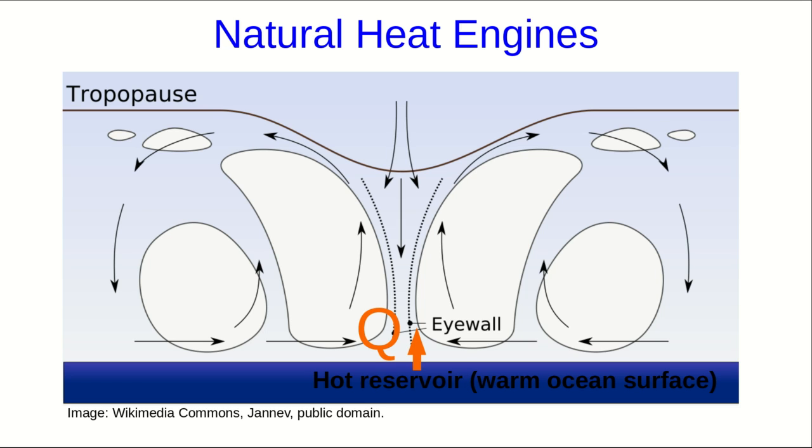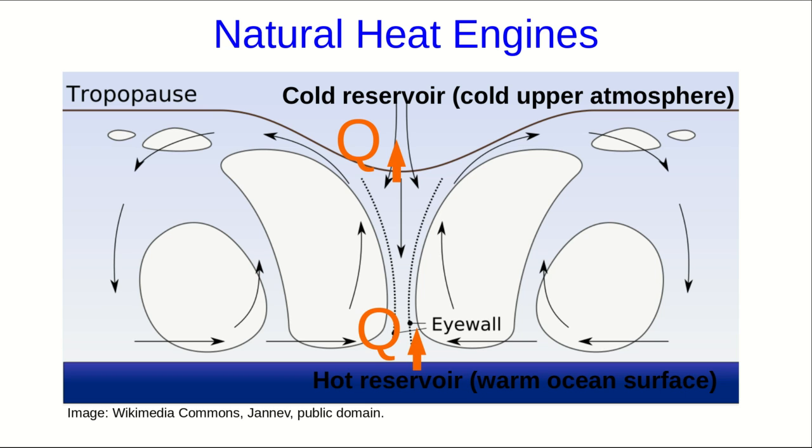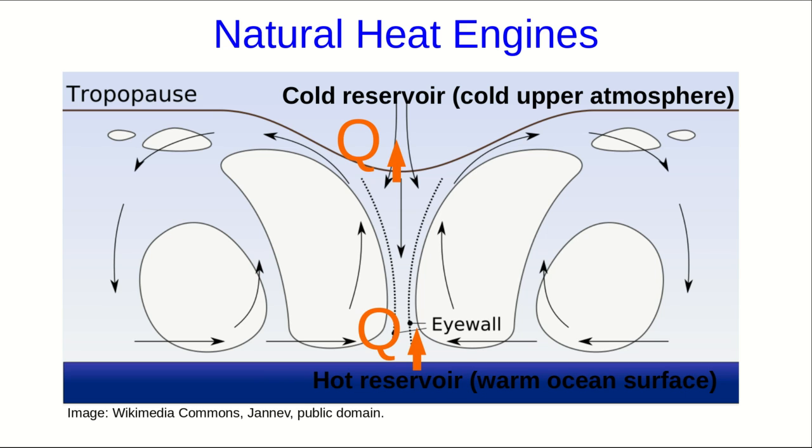Take a hurricane, for example. The hot reservoir is the warm ocean surface, and the cold reservoir is the cold upper atmosphere. And it does work, producing fast winds and raising moisture to high altitude before it rains.